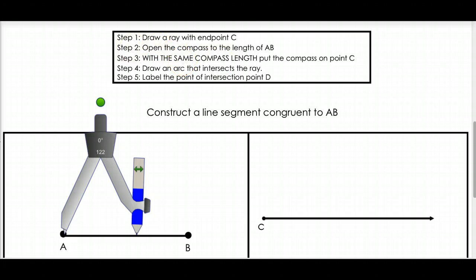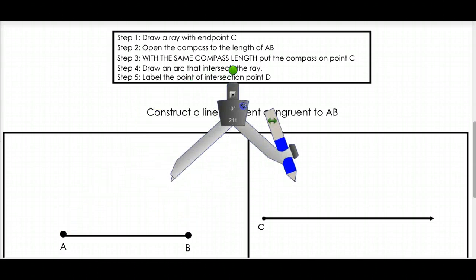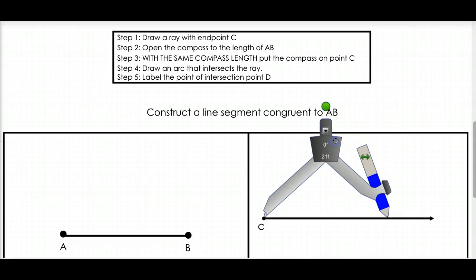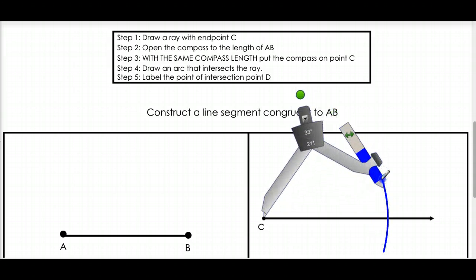Two, we're going to open our compass to the length of AB, like so. Now, don't draw anything yet. We're just going to lift it up and move it over here, putting this part, that metal part, on the endpoint C. Now, from here, we're going to draw an arc that intersects the ray. We're just going to draw this arc like this, intersecting the ray. And this point of intersection, we'll just call this point D, where these two intersect.